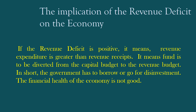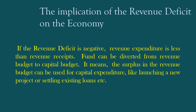In short, the government has to borrow or go for disinvestment, meaning the financial health of the economy is not good. If the Revenue Deficit is negative, revenue expenditure is less than revenue receipts, so funds can be diverted from the revenue budget to the capital budget — the surplus can be used for capital expenditure like launching new projects or settling existing loans.